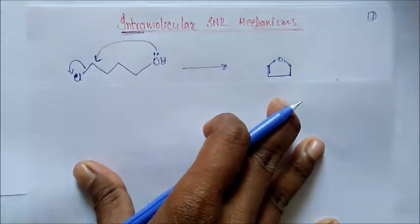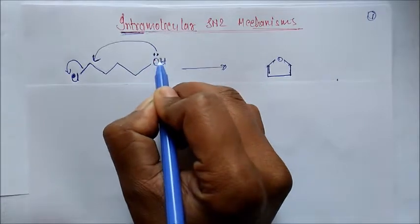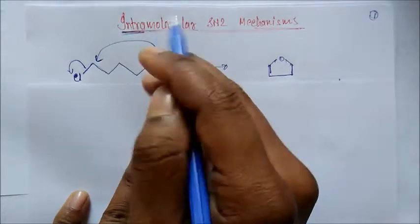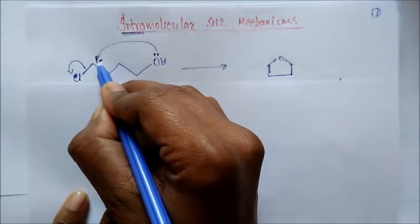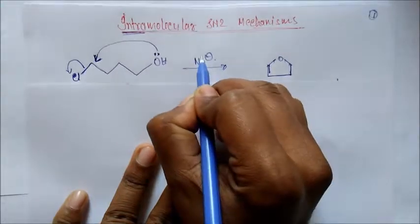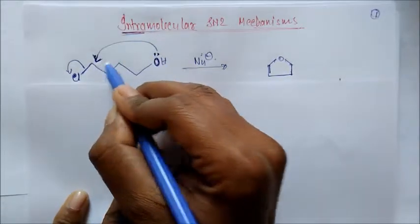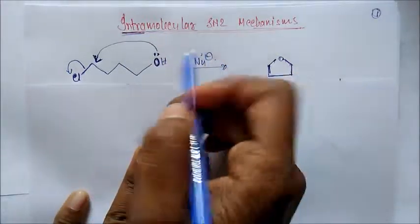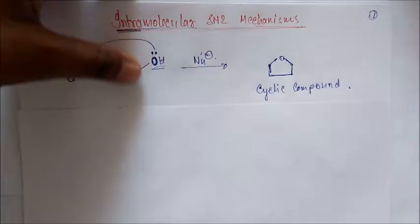Let's take a substrate that has chlorine (a leaving group) attached to it, along with an element carrying a lone pair on the same substrate. Because we have a lone-pair-carrying group within the same molecule, it will attack directly at the carbon bearing the leaving group — rather than any external nucleophile. This forms a cyclic compound. That is why it is called intramolecular: both the leaving group and the nucleophile are within the same molecule.